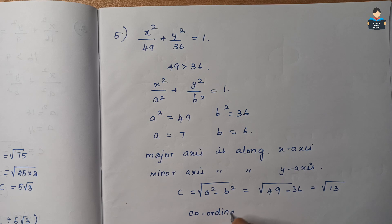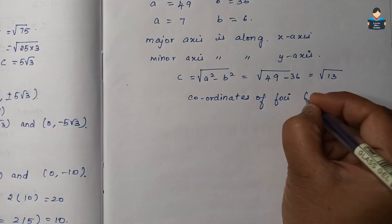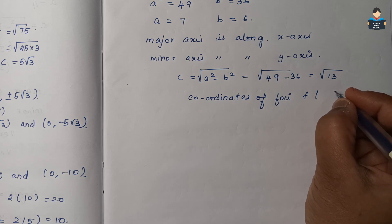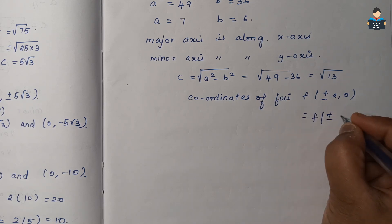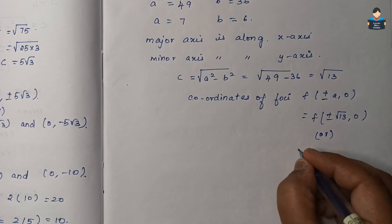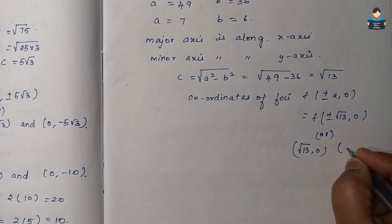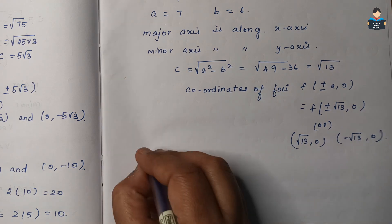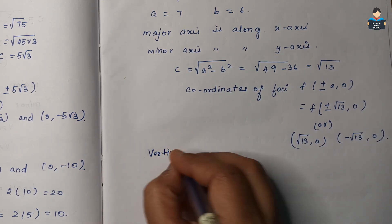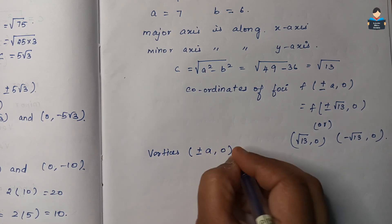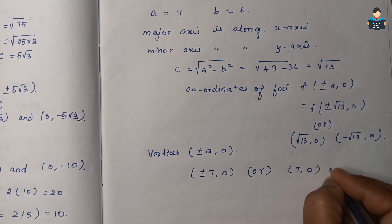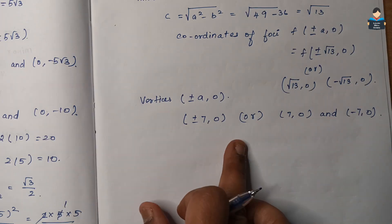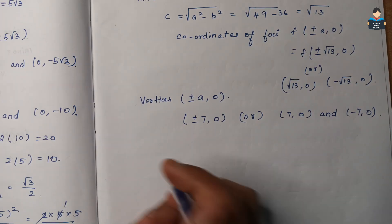Coordinates of foci: since major axis is along x, foci = (±c, 0) = (±√13, 0), so (√13, 0) and (−√13, 0). Vertices are at (±a, 0) = (±7, 0), so (7, 0) and (−7, 0).